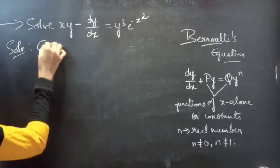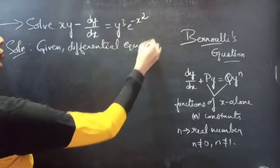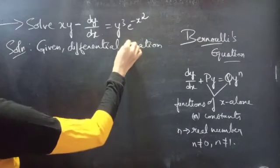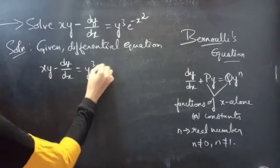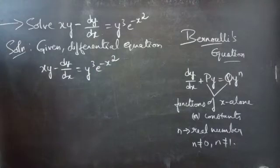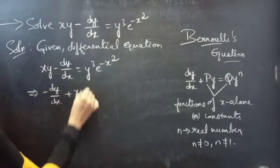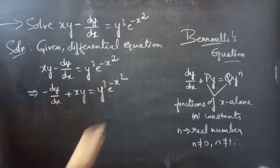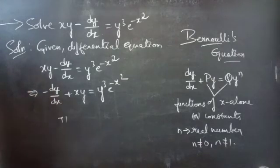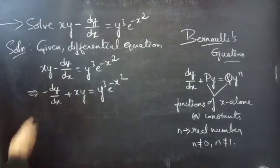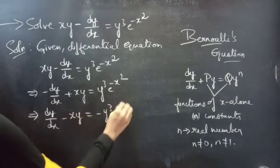Solution — given differential equation: x·y minus dy/dx equals y³ times e^(−x²). We can write this as minus dy/dx plus x·y equals y³ times e^(−x²). We will make the coefficient of dy/dx equal to positive 1, so we multiply both sides by minus. Then we get dy/dx minus x·y equals minus y³ times e^(−x²).